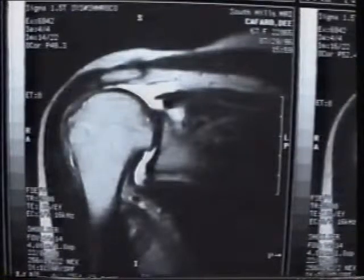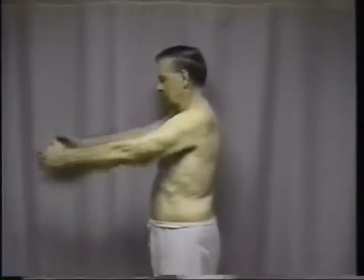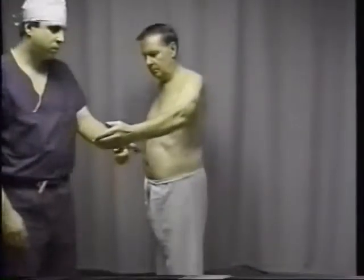The MRI demonstrates the massive tear which involves principally the supraspinatus and the upper portion of the infraspinatus. Case 5, JB, is a 72-year-old with a chronic massive tear involving both shoulders — the supraspinatus and the infraspinatus. This man has profound limitation of active flexion associated with pain.